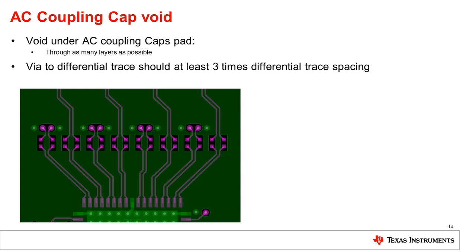PCIe specifications require AC coupling caps to be placed on the TX signals. However, pads due to the AC coupling caps can provide parasitic capacitance and thus cause impedance drop. To avoid this impedance drop, typically we provide voids under the AC coupling caps and their body. This should be done through as many planes as possible to make sure there is no impedance impact.